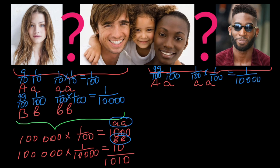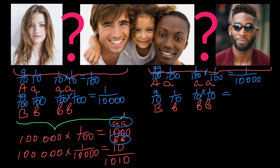Now let's consider locus B in this second population. Again, this locus has two alleles: dominant allele B and recessive allele B. The frequency is as follows: 9 out of 10 would be the dominant normal allele B, and 1 out of 10 is the recessive defective allele B. The probability that a child in this population would have genotype small b small b is 1/10 × 1/10, giving a probability of 1 out of 100.